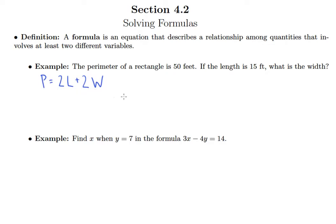What we're going to do is plug in 50 in place of P for the perimeter and plug in 15 in place of L for the length. Once we do that we only have one variable left over and that's something we know how to solve for.